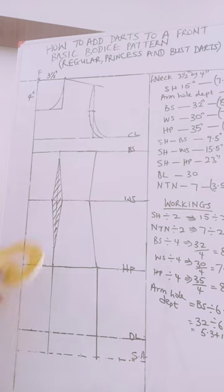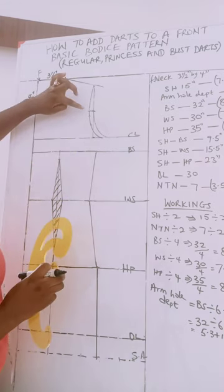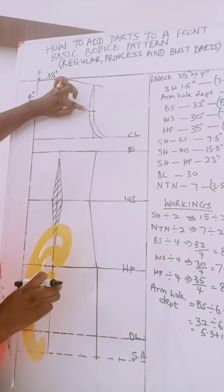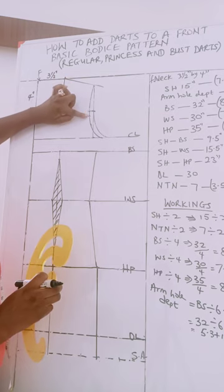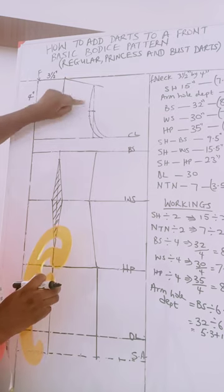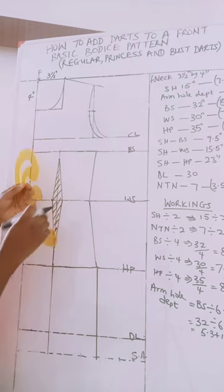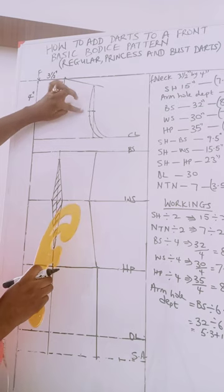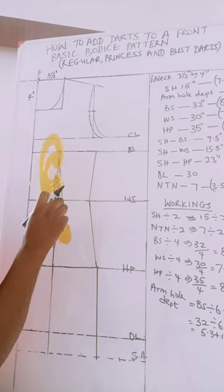So it depends on what you want. You can make, you can have your princess dart from the midpoint of the armhole, or you come down by half inch from the midpoint of the armhole. So I'm going to be using the midpoint of the armhole depth for this customer.